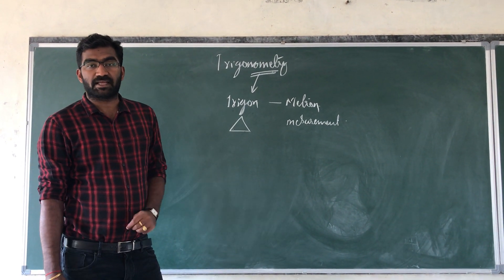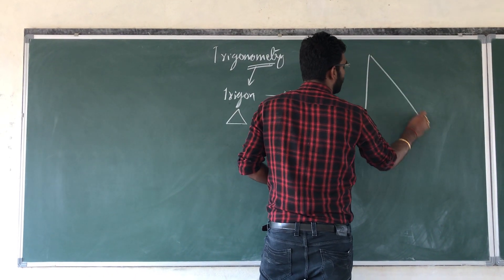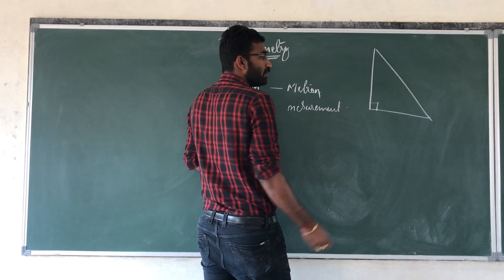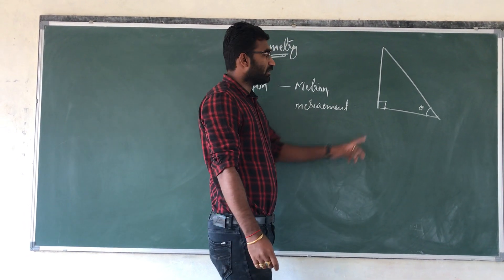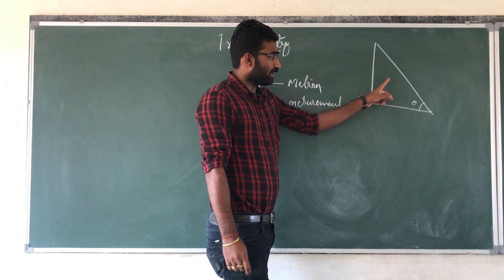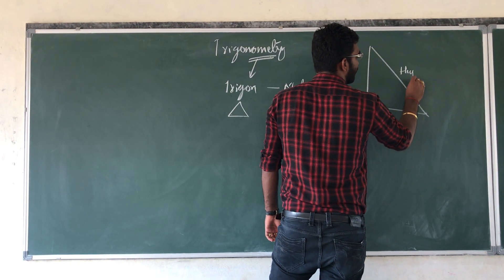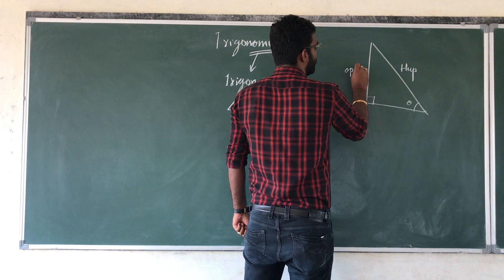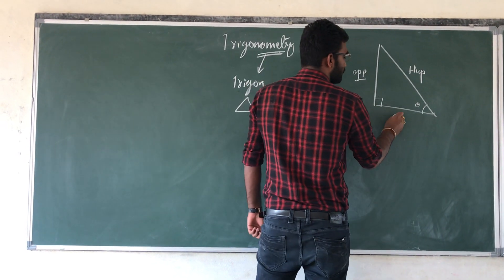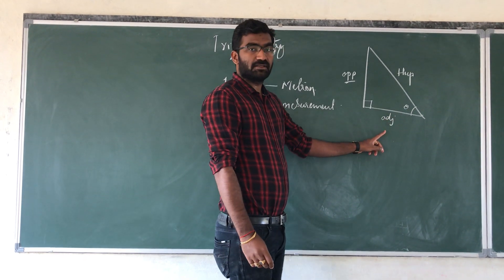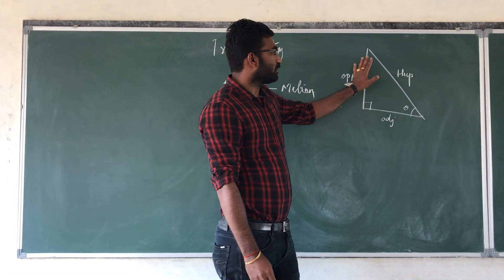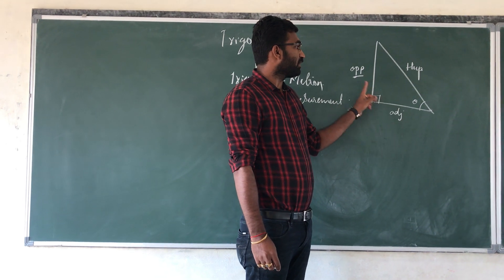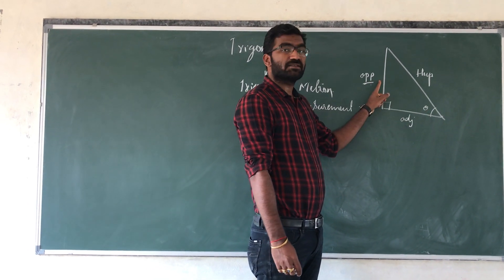We have different types of triangles, but in this chapter we are going to discuss only about the right-angled triangle — the one having 90 degrees. If I consider this angle as theta, and this is 90 degrees as a base, the side opposite to the 90 degree angle is always called the hypotenuse. And if this angle is under consideration, this side will be the opposite side, and the remaining side will be adjacent. It is adjacent because it is adjacent to this angle. So in this right angle triangle, we have three sides: hypotenuse, adjacent, and opposite.